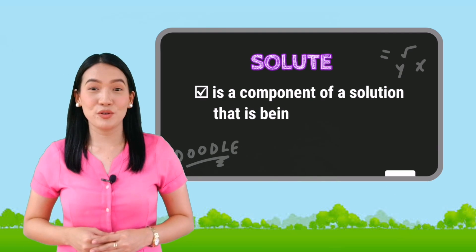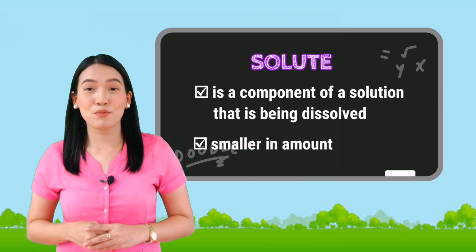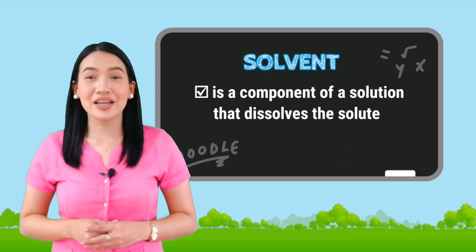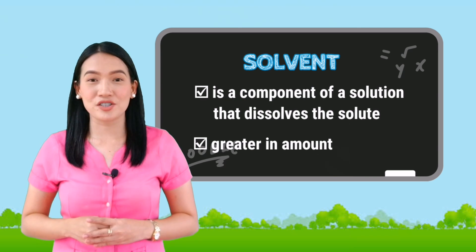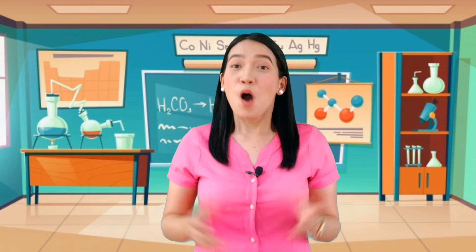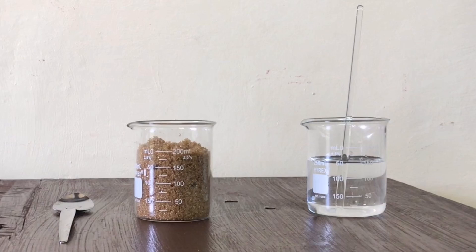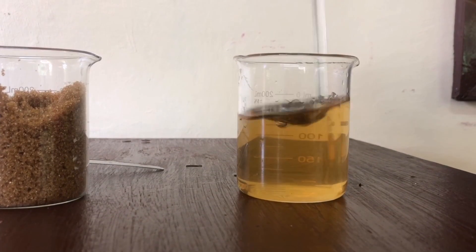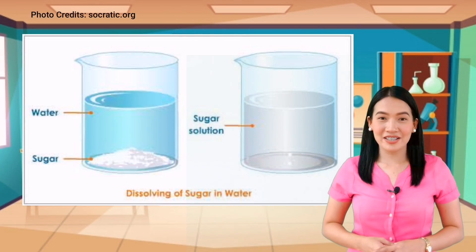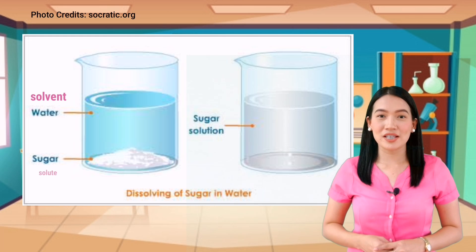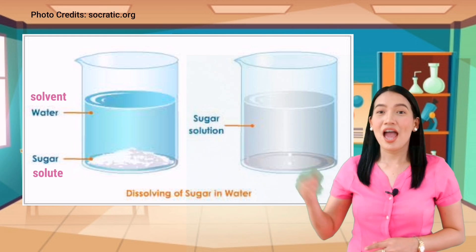Solute is a component of a solution that is being dissolved, normally present in a smaller amount. On the other hand, solvent is a component of a solution that dissolves the solute, and it is normally greater in amount. To understand more about this, let's try this simple experiment. We need a beaker of water, a stirrer, sugar and spoon, and a heating apparatus. We're going to mix a spoon of sugar into the water and stir it until the sugar dissolves completely. In this case, the water in the glass is the solvent, the sugar — which is the substance being dissolved — is the solute, and the result is called a sugar solution.